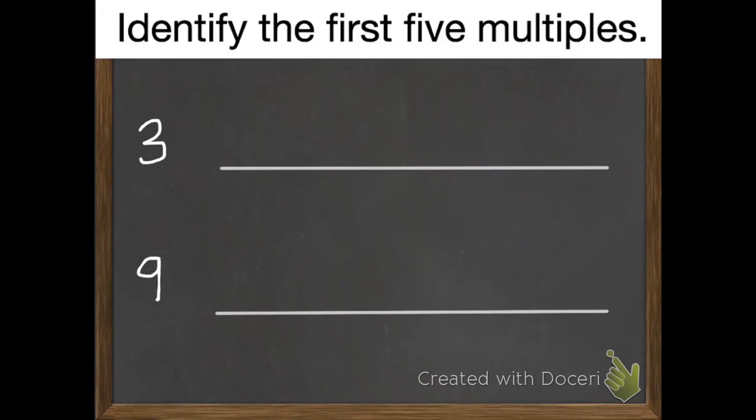Okay, the first 5 multiples of 3 are 0, 3, 6, 9, 12.